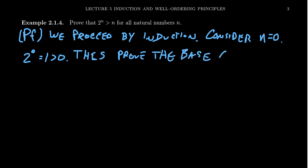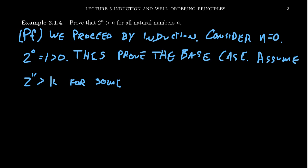Next we state our inductive hypothesis: assume that 2^k > k for some k ≥ 0. This is our inductive hypothesis.